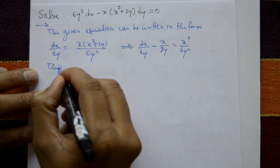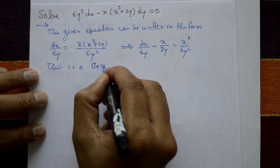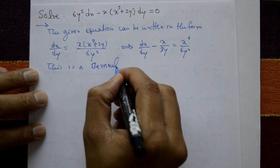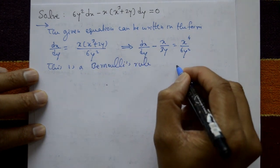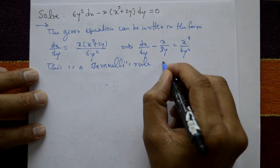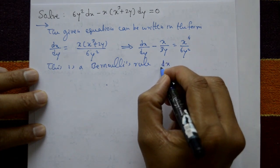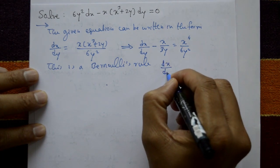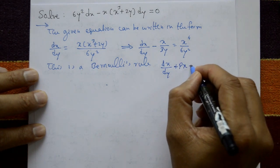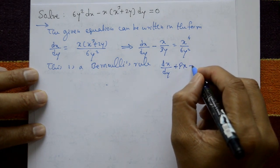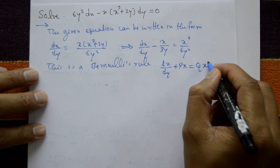Now this is a Bernoulli's equation. Bernoulli's rule is of the form: dx by dy plus px is equal to q into x raised to n.